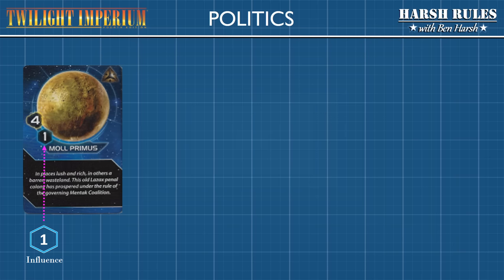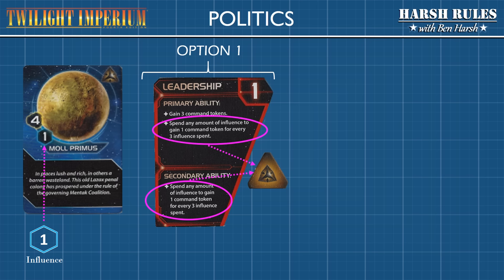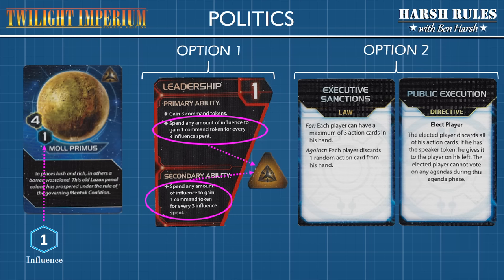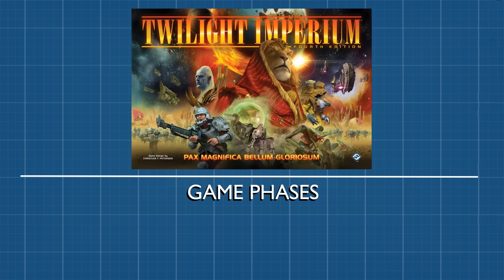Finally, let's look at politics. In Twilight Imperium, influence has two main uses. First, players can use influence to purchase command tokens when the leadership strategy card is played. Second, when the agenda phase becomes available, influence gives a player political power to sway the vote for laws and directives. Now that we know how the mediums of exchange work in Twilight Imperium, it's time to move on to more challenging mechanics.